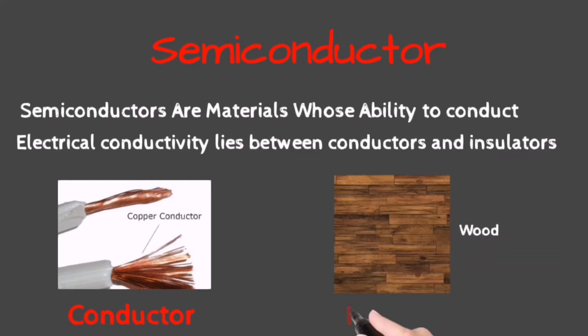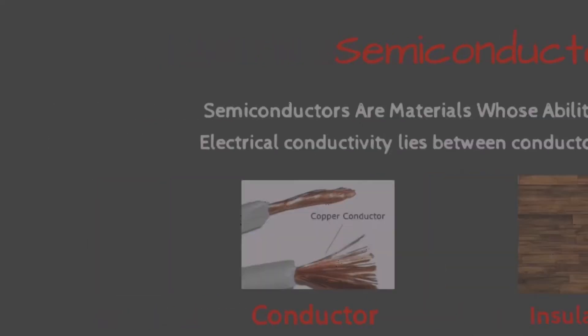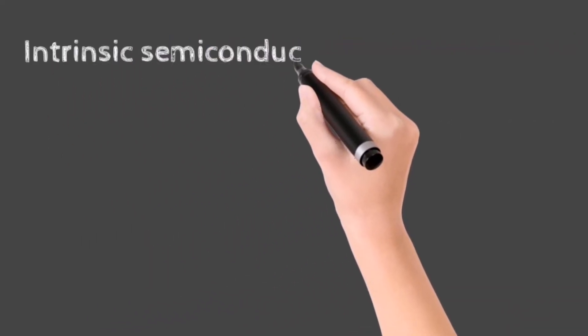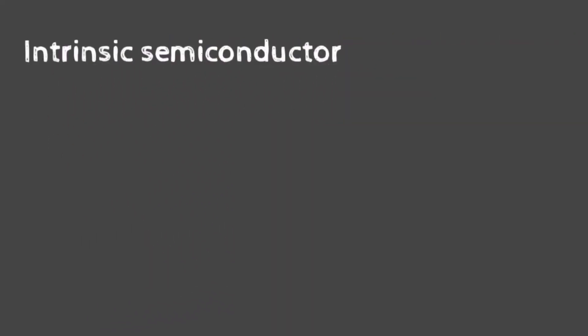Semiconductors are further divided into two types: intrinsic semiconductors and extrinsic semiconductors.